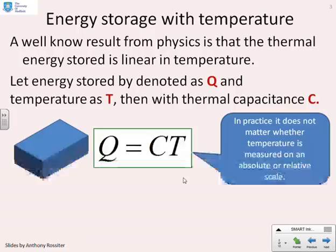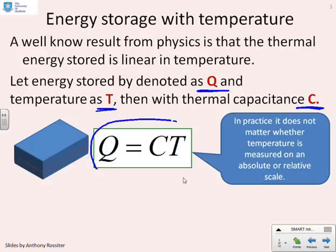So first, let's look at some of the components we might need to know. It's well known that if you heat something up it stores energy and the amount of energy stored is considered as linear in temperature. If we imagine that the energy stored is denoted by capital Q and we let the temperature be capital T and the component has thermal capacitance C, then we can write Q equals C times T.